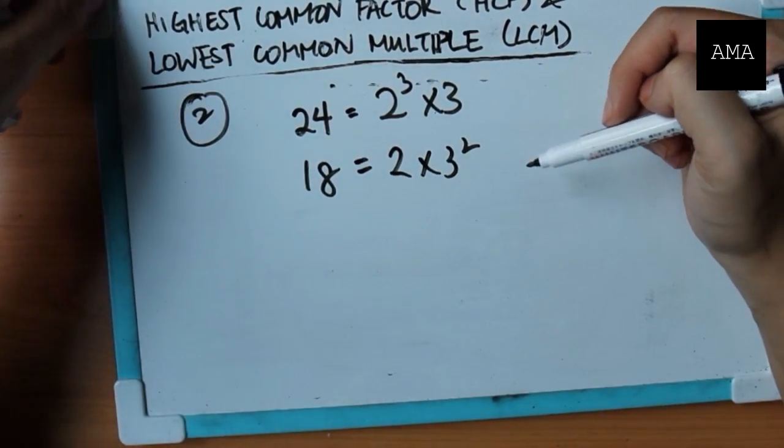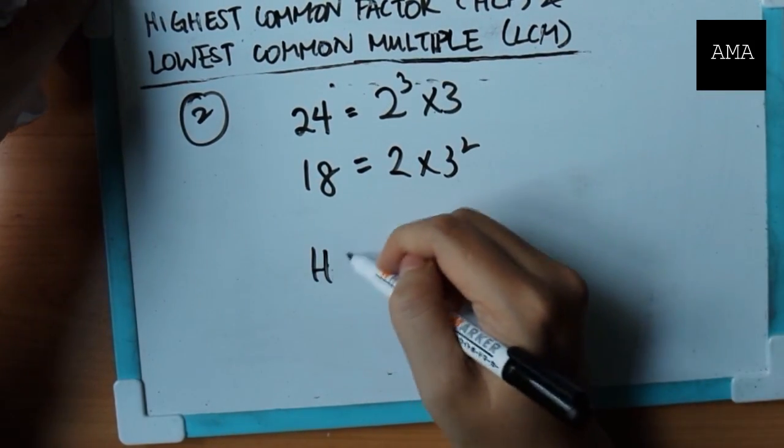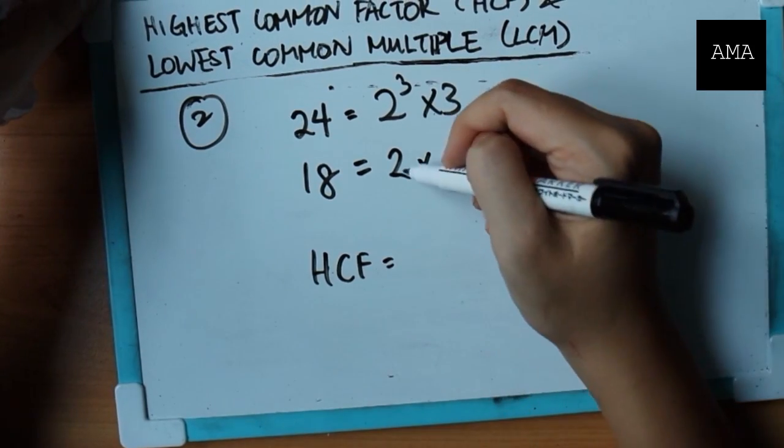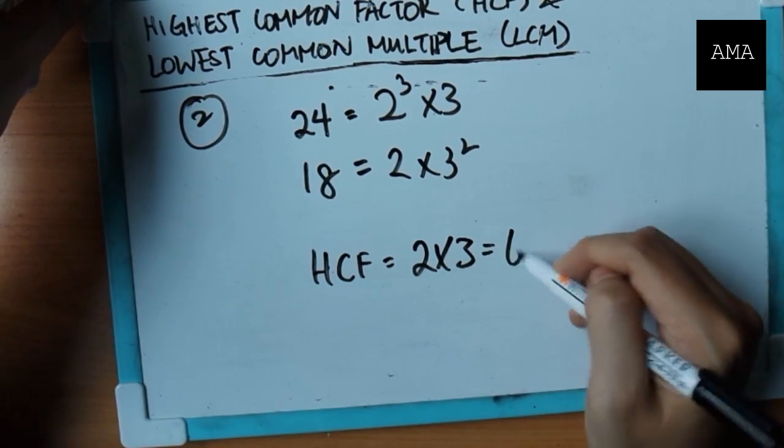Now, to find HCF, you have to take any common pairs they have. So they have one common pair of 2, right? 2 here and 2 here. And they have a common pair of 3. So the answer is 6.